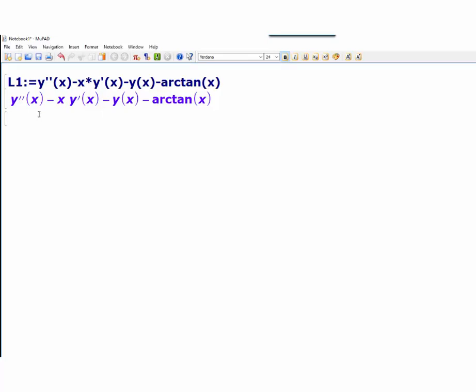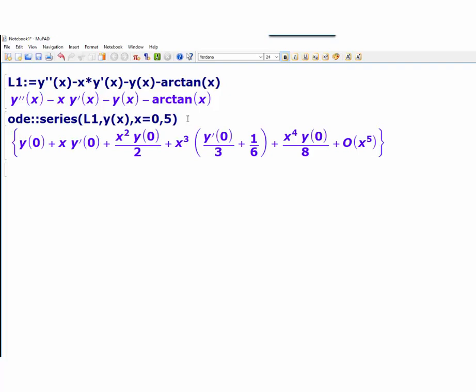We want to get a series solution of this differential equation up to degree 5. So we'll just type in ordinary differential equation in series format. Here L1 is the expression, I want the solution for Y, and our center is at x equals 0 up to degree 5. When you press enter, here is the solution, written in terms of Y at 0 and Y prime at 0.